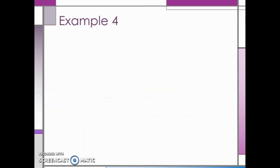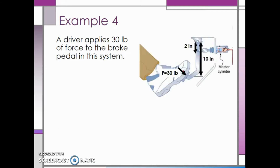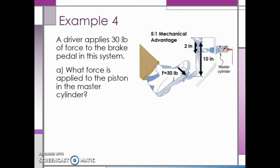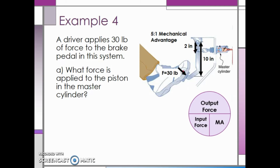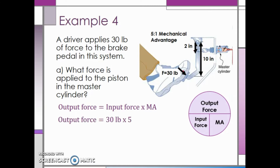Let's take a look at another example. A driver applies 30 pounds of force to the brake pedal in this system. First, we want to find what force is applied to the piston in the master cylinder. The piston in the master cylinder will be the output force. We are looking at the same brake pedal as in the previous example, and it has a mechanical advantage of 5. The output force is equal to the input force multiplied by the mechanical advantage — 30 pounds times 5 — giving us 150 pounds at the master cylinder piston.